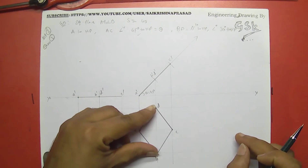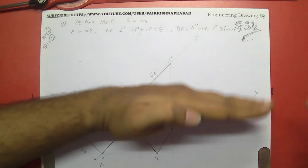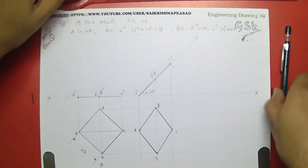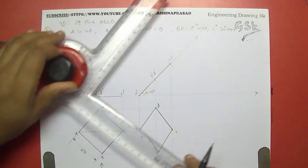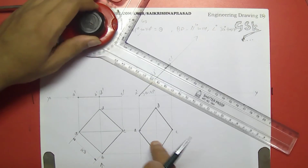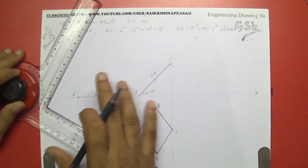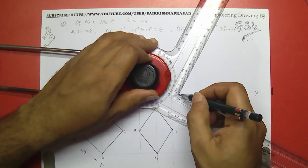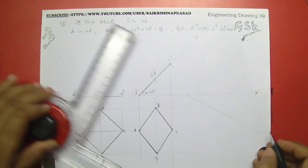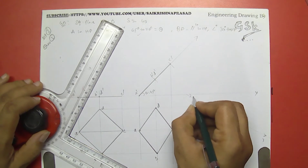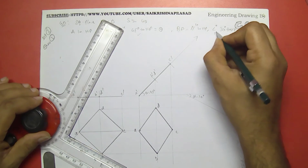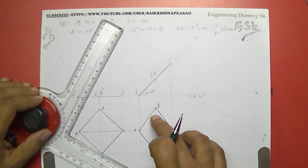Now we are making diagonal BD inclined at 30 degrees to the VP. This is the VP and this is the HP. So your plane is making 30 degrees to the VP. Let us draw a ray at 30 degrees and on that ray we will reproduce the same figure. This is the change of position method. This is phi = 30 degrees.